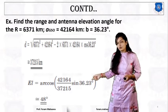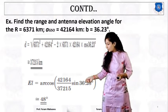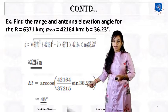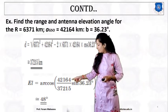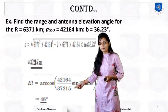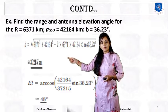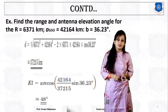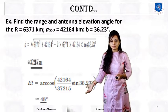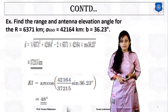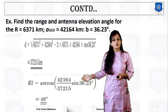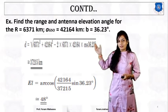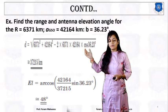From this value, we calculate the elevation angle using cos inverse of A_GSO over d, into sin(b). A_GSO is 42,164 km, small d comes from the previous calculation, and b is already given. The value of elevation angle is 48 degrees. By remembering these two formulas, you are able to calculate the value of d and the elevation angle.